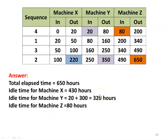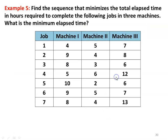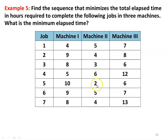To understand in a better way, we take another example: find the sequence that minimizes the total elapsed time required to complete the following jobs in 3 machines. There are 7 jobs and 3 machines. Processing times: machine 1 — 4, 9, 8, 5, 10, 9, 8; machine 2 — 5, 4, 3, 6, 2, 5, 4; machine 3 — 7, 8, 6, 12, 5, 6, 7, 13.